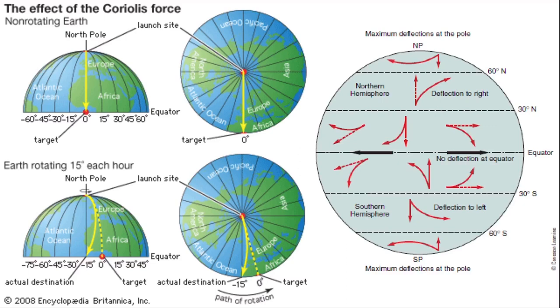Air should rise at the hot equator, where the Sun hits the Earth directly. That air will then move towards the poles in a convection current, where it sinks at the poles and should flow back toward the equator in a cycle.